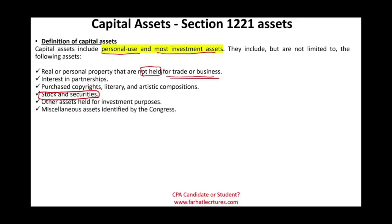Miscellaneous assets identified by Congress are also capital assets. You can go to congress.gov and look up what Congress classifies as capital assets. But essentially, personal use assets and investment assets are the core categories of capital assets.